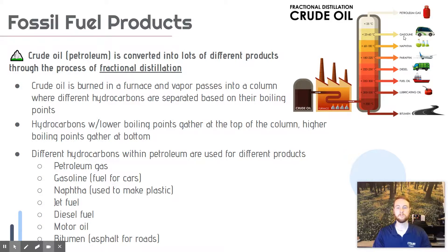There are many end uses for petroleum. Most familiar is gasoline — the fuel we put in our cars. We also get naphtha, which is used to make plastics; virtually all plastics originated with crude oil input. We get jet fuel, diesel fuel for large trucks, motor oil for lubrication, and bitumen used in asphalt on roads and sidewalks. All of these different products come from this starting material of crude oil or petroleum.